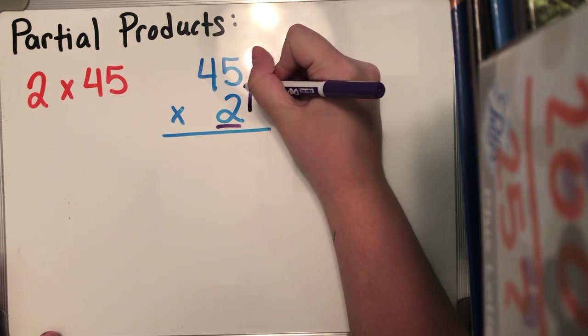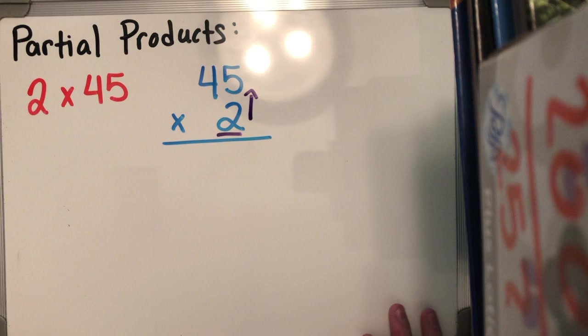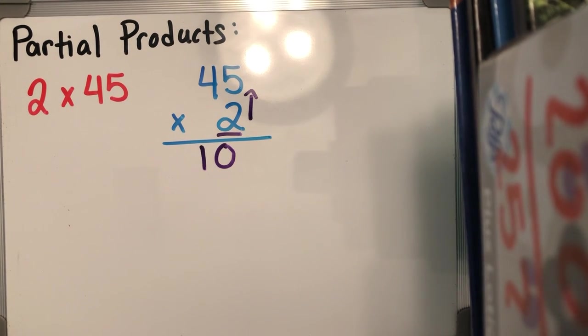So I'm gonna go up the ones. It's gonna be two times five, which is 10. And I'm gonna write 10 all the way down.